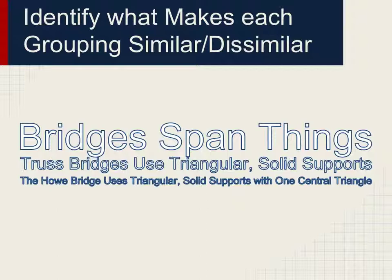From there, there are truss bridges and they use triangular solid supports. Underneath the category of truss bridges, you get even more refined — the Howe bridge uses triangular solid supports with one central triangle. You need to create this hierarchy, this pyramid of thinking, for your topic.